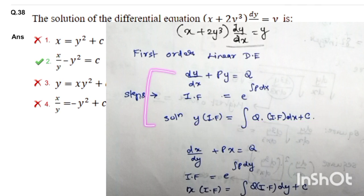If dy/dx + py = q, then the solution is y times integrating factor equals integral of q times integrating factor dx plus c. And if the equation is dx/dy + px = q, then the solution is x times integrating factor equals integral of q times integrating factor dy plus c.